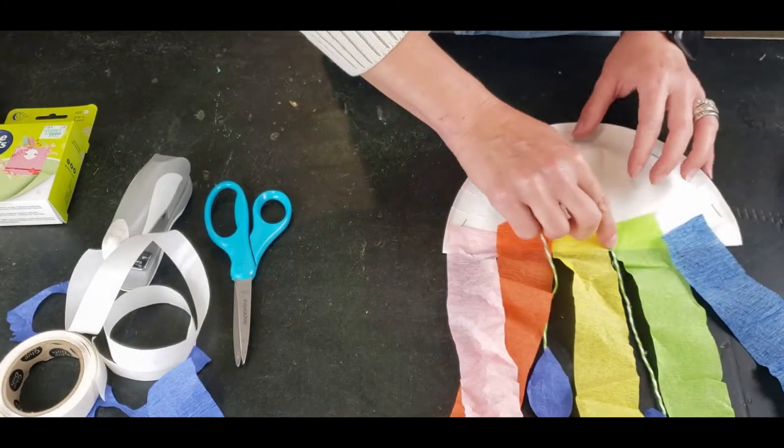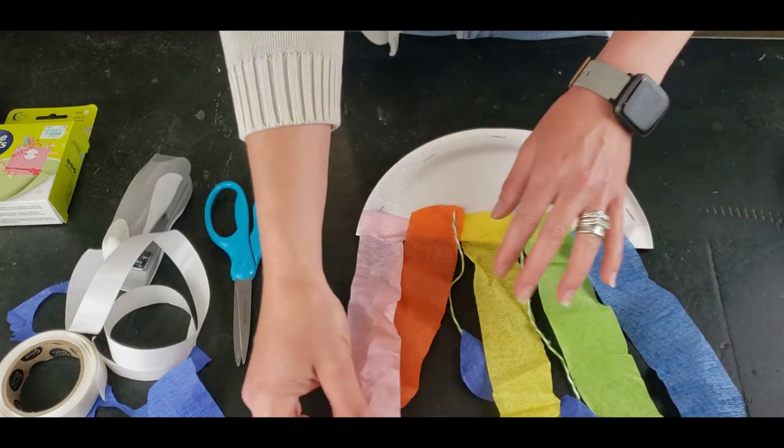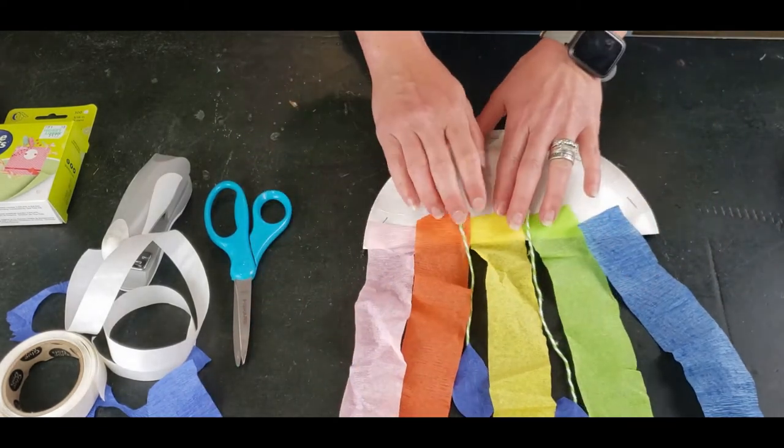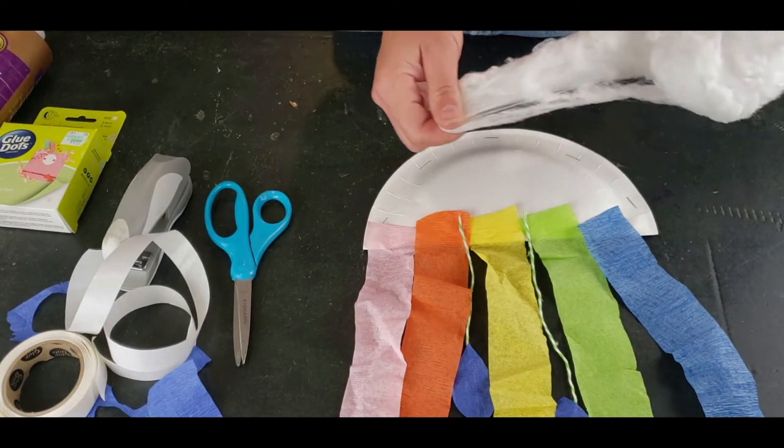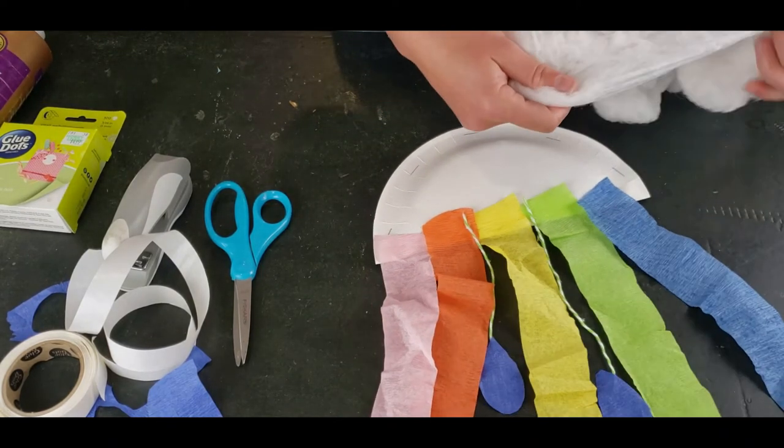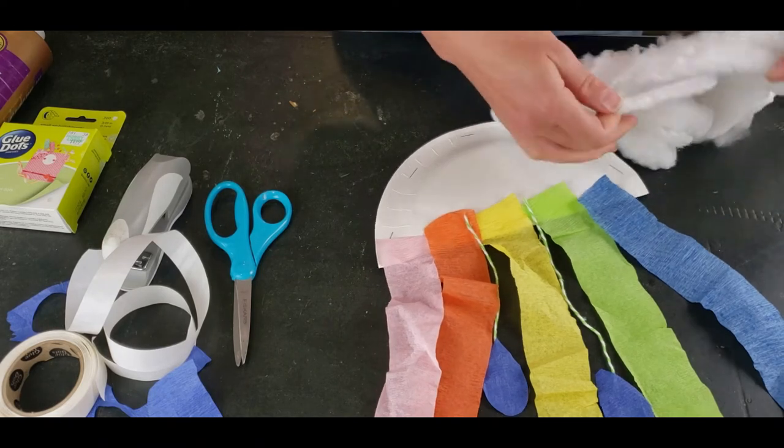And then what we have to do is add all of the fluffy texture to our cloud and rainbow. So go ahead and pull some pieces from your cotton ball or whatever fluffy texture you have.